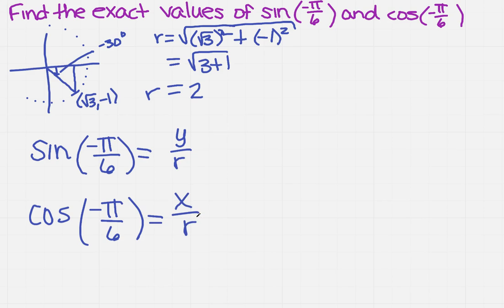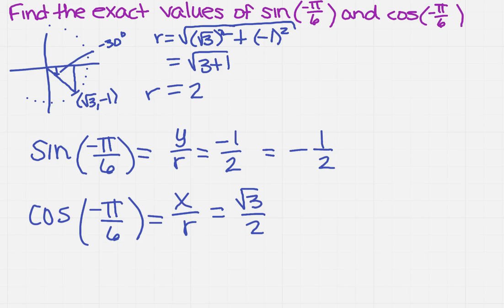I want you to pause the video and try it on your own, then come back and check your answers. Welcome back — hopefully you got the right answer. The sine of negative pi over 6 is negative 1 half, and the cosine of negative pi over 6 is the square root of 3 over 2. These would be your final answers.